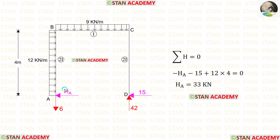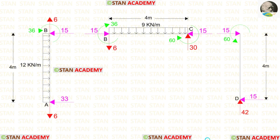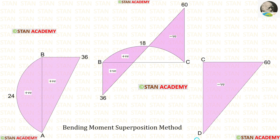Now let us find HA. Assuming HA acts towards the left side and applying sigma H = 0, HA gives a positive value, confirming our assumption is correct. Now let us make the free body diagram so we can easily draw the shear force and bending moment diagrams. Here the shear force diagram has been made. We can draw the bending moment diagram by the superposition method. This concludes our session — thank you for watching.